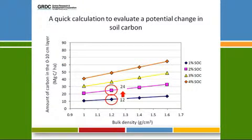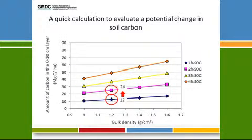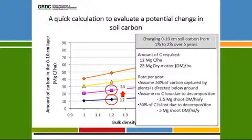A quick calculation to give an indication of what a change in soil carbon really means. If someone has told me they've shifted soil carbon content from 1% to 2% in the top 10 centimeters over five years — at a bulk density of 1.2, that's 12 tons of carbon, shifting to 24 tons of carbon. That means somehow over five years I'd have to find a mechanism for putting an additional 12 tons of carbon into that soil — potentially over and above what you've currently done. So if you want to move from there to there, you've got to find that extra carbon.